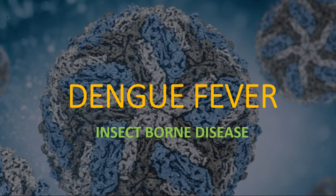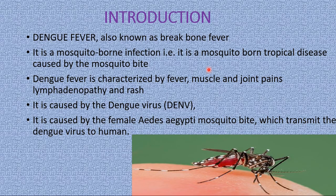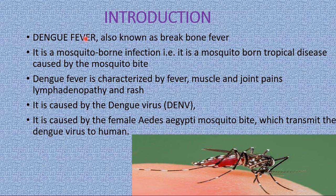Hi everyone. Now we are going to discuss about dengue fever, which is one of the types of insect-borne diseases. Dengue fever is an acute febrile disease and is widely distributed in regions with tropical and subtropical climates. It is also known as break bone fever due to the severe feeling of muscle and joint pains. It is a mosquito-borne infection caused by a bite from Aedes aegypti, which transmits the dengue virus, the causative agent of this disease.